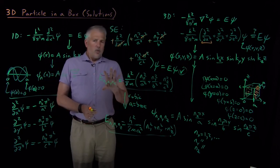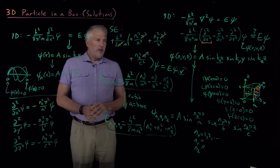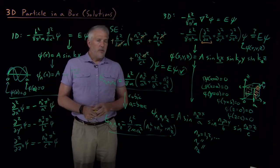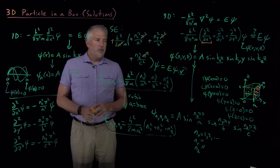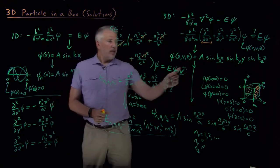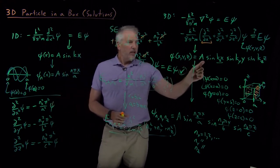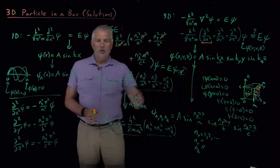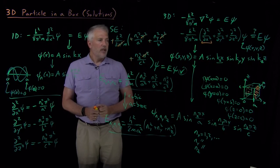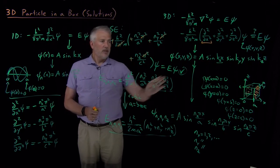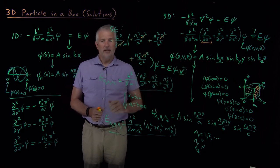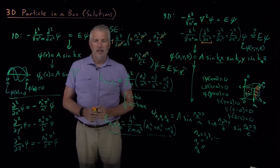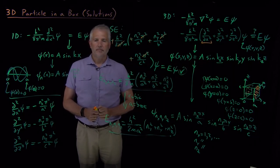We're almost done writing down the wave functions for the 3D particle in a box, but we haven't yet determined the normalization constant A. Normalizing the wave function is the next step we'll do next time.